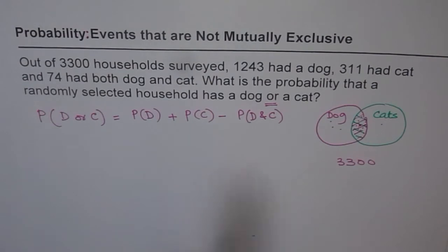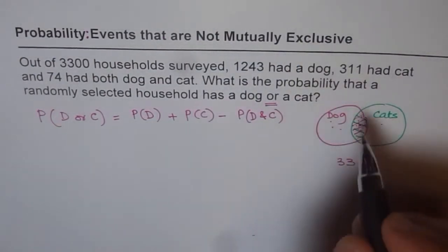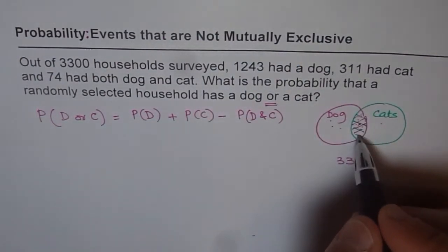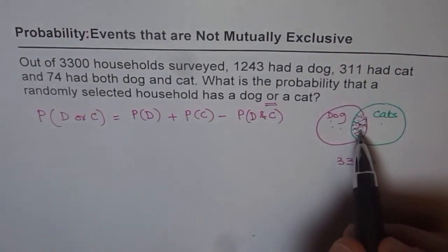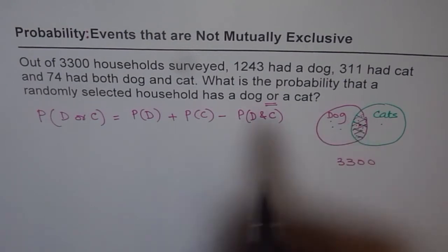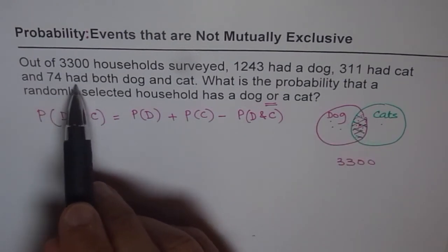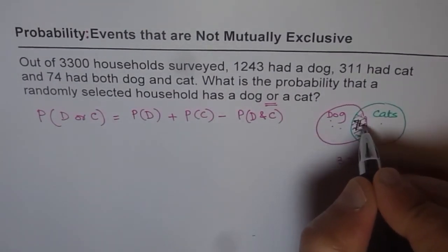So that is the key thing here to solve mutually exclusive and not mutually exclusive problems. So if it is not mutually exclusive, there is an overlap. But if it is mutually exclusive, then there is no overlap and this is not required. So in this case, it is overlapping. Since we are given that there are 74 that had both dog and cat, so there is 74 here.